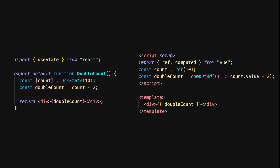Let's talk about computed state — essentially, state derived from other state values. In React, computed state is usually handled by performing calculations directly within the component's render method. We use useState to set the initial count to 10, and then calculate doubleCount as count times 2. React recalculates doubleCount every time the component renders.